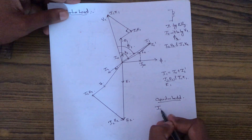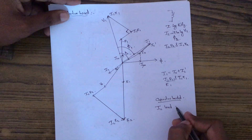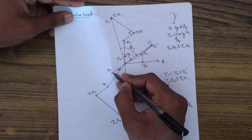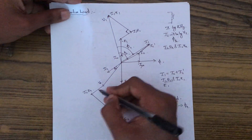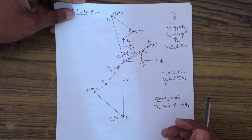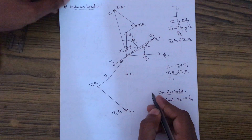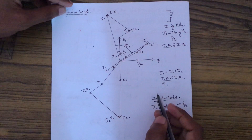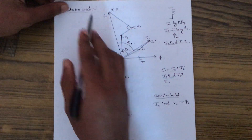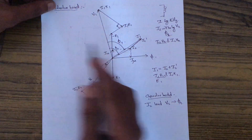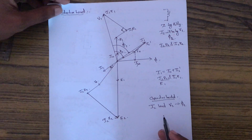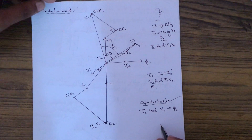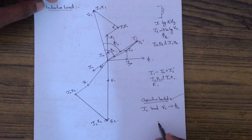For capacitive load, current I2 will be leading V2 by an angle phi2. The vector diagram changes accordingly. So the vector diagram of a transformer depends upon the type of load connected. The question can ask: draw the vector diagram for an inductive load, a resistive load, or a capacitive load. Thank you.